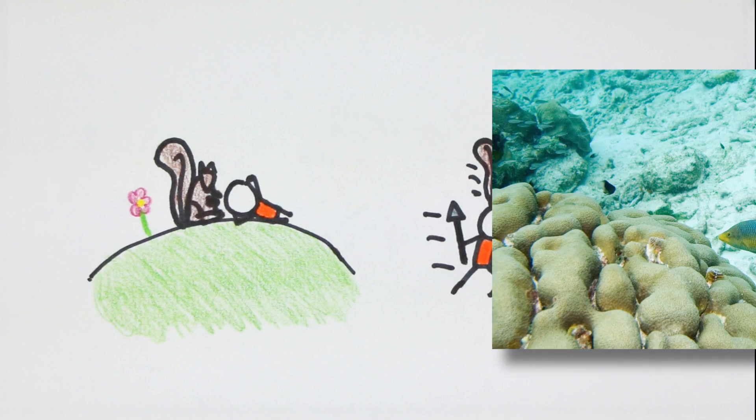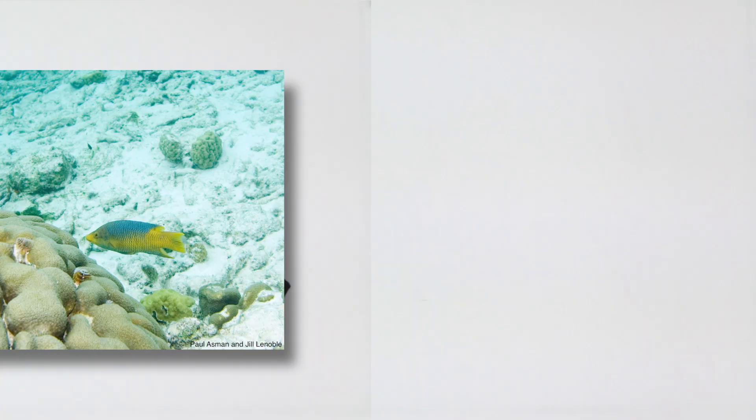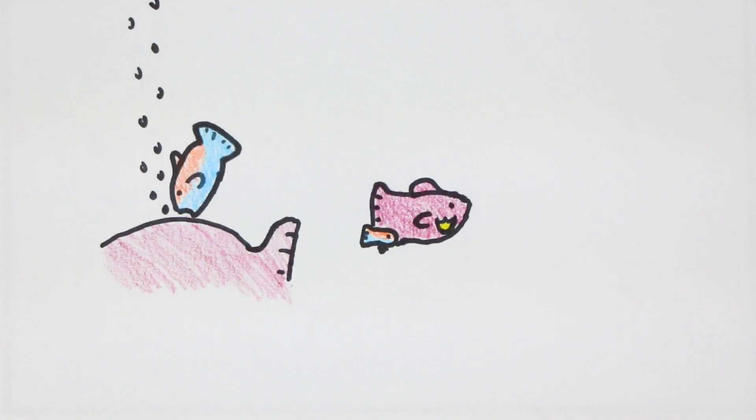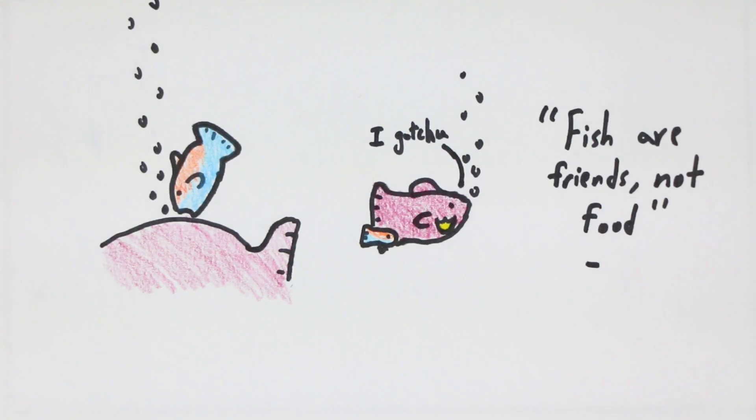And it's because of this that fishes like the Spanish hogfish expend energy to clean larger fish for food and protection, and why the larger fish don't eat the smaller fish for nutrients, as well as why chimpanzees groom each other, screening their friends for parasites.